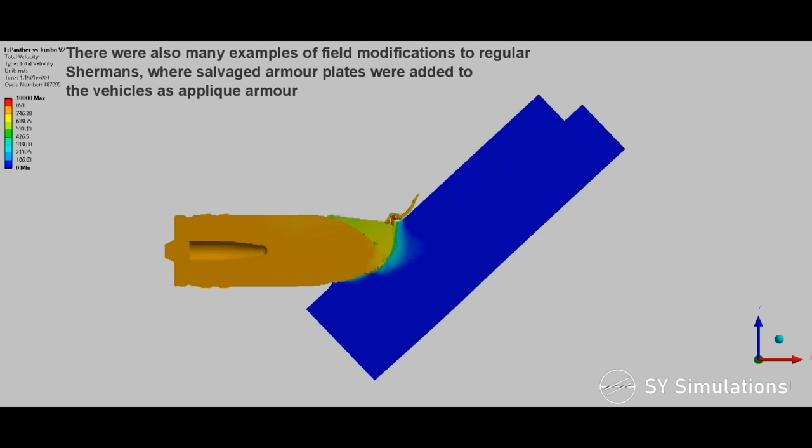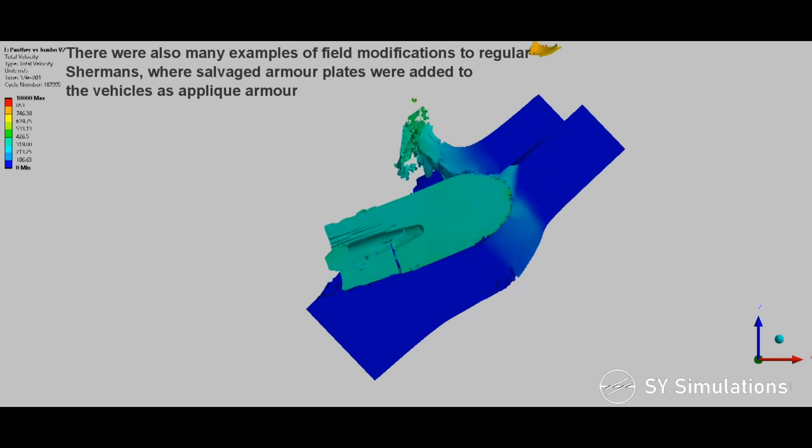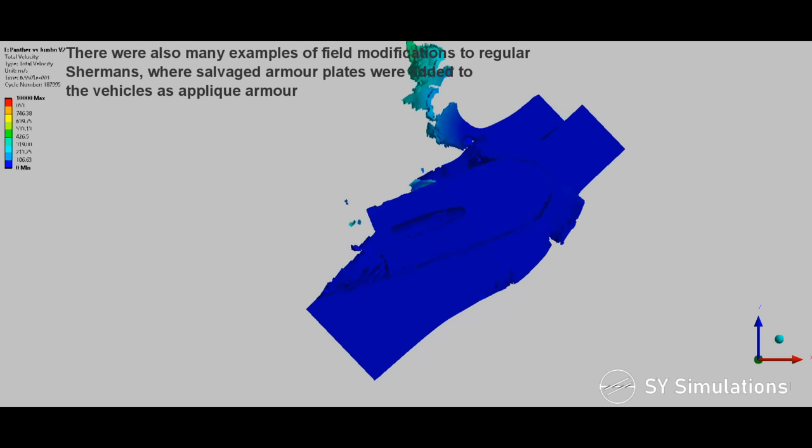There are also many examples of field modifications to regular Shermans, where salvaged armor plates were added to the vehicles as applique armor.